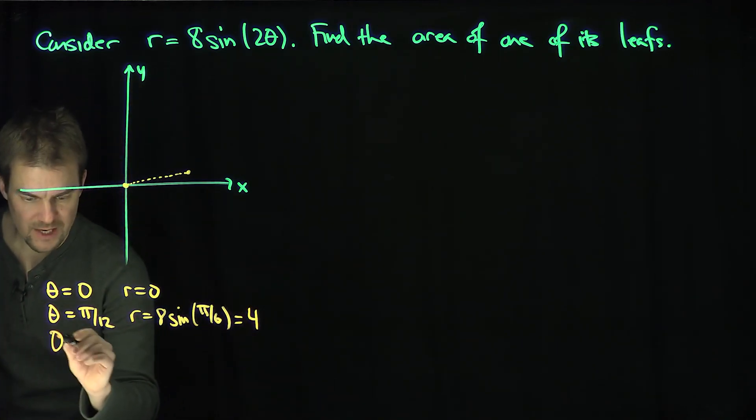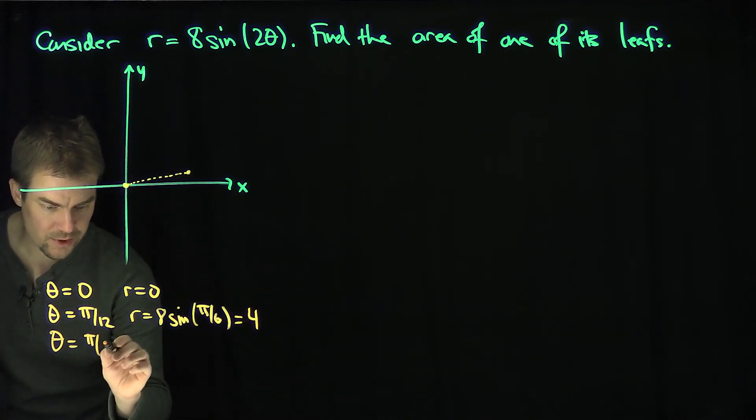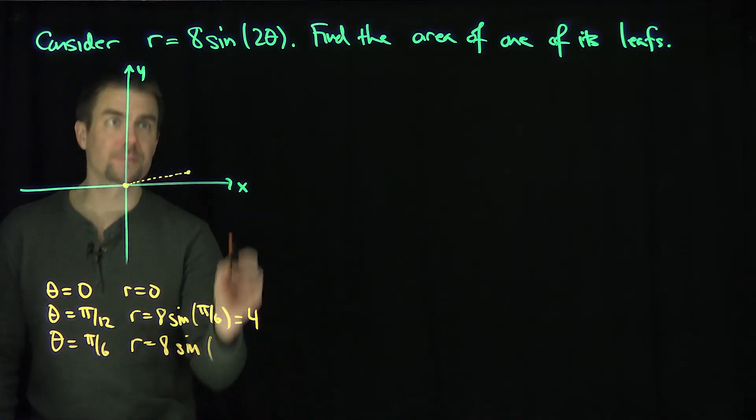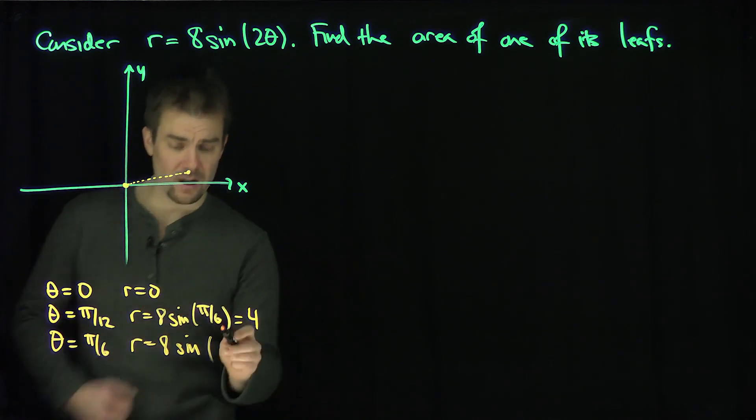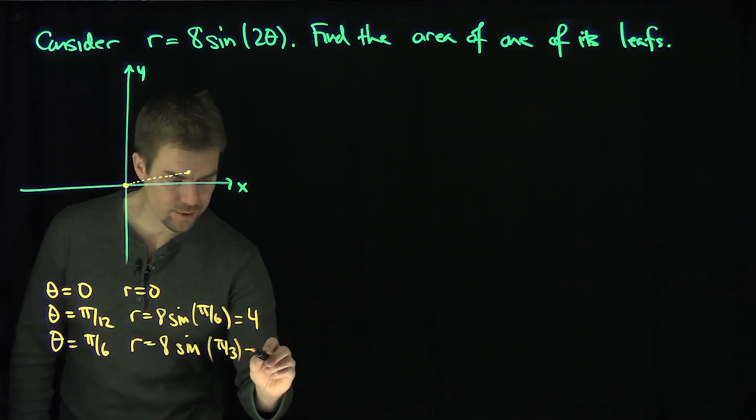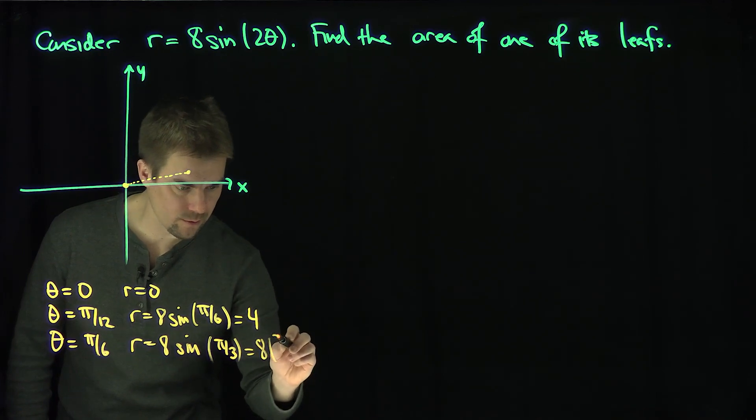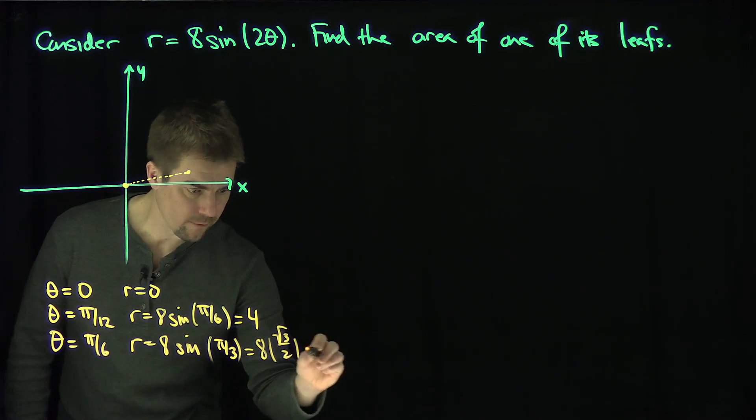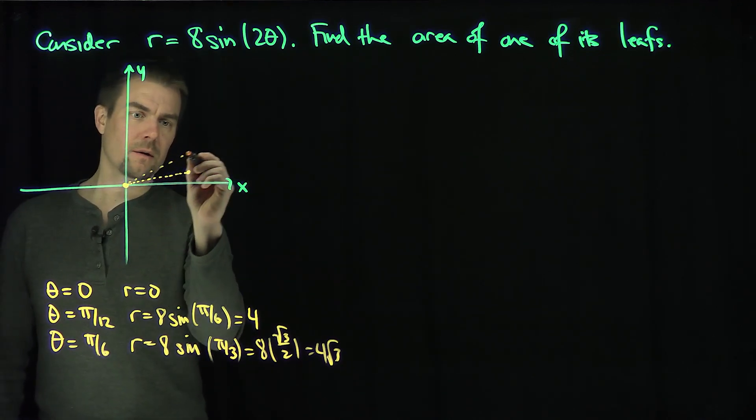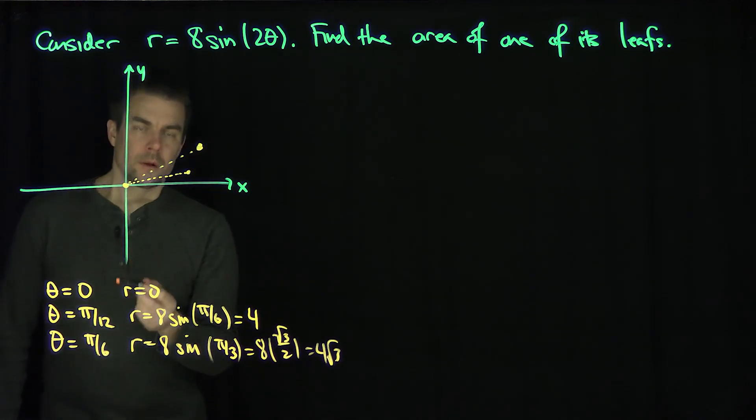And then when I plug in theta equals pi over 6, a little bit of a larger angle, then r will be 8 sine of pi over 3. The sine of pi over 3 is root 3 over 2. So this is going to be 8 times root 3 over 2, or 4 root 3. So it gets a little bit bigger yet. I go to a different angle, get a little bit bigger.